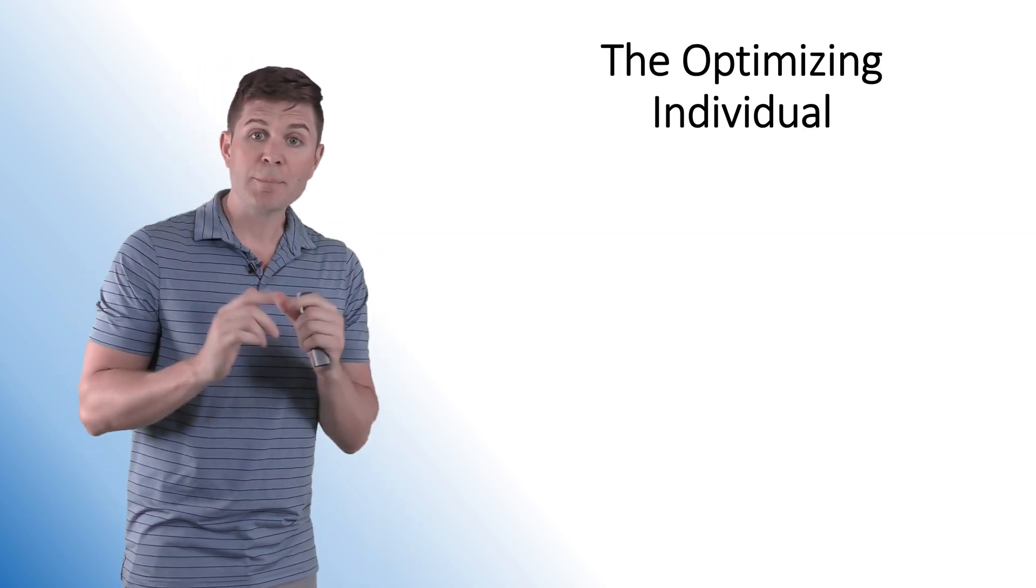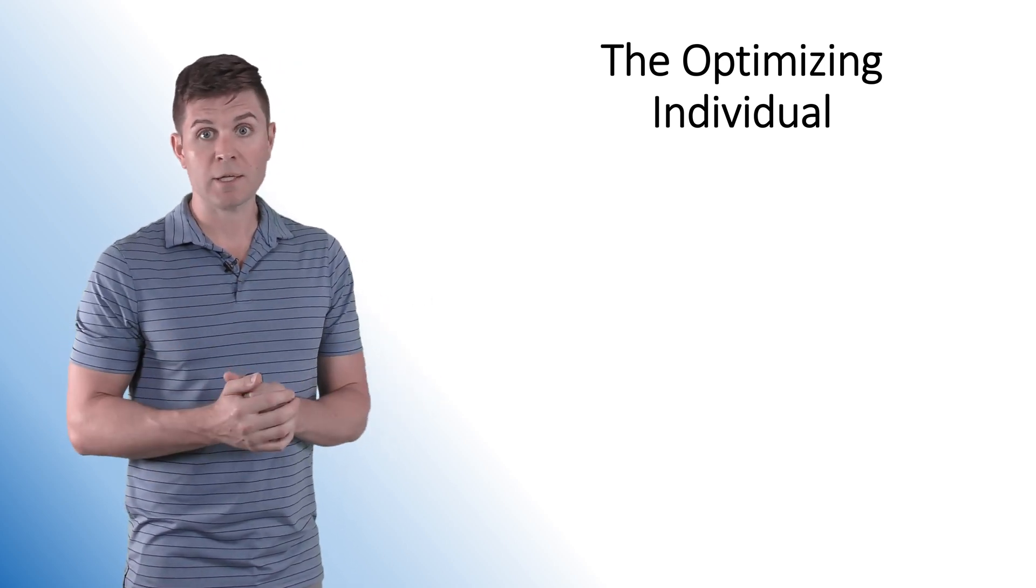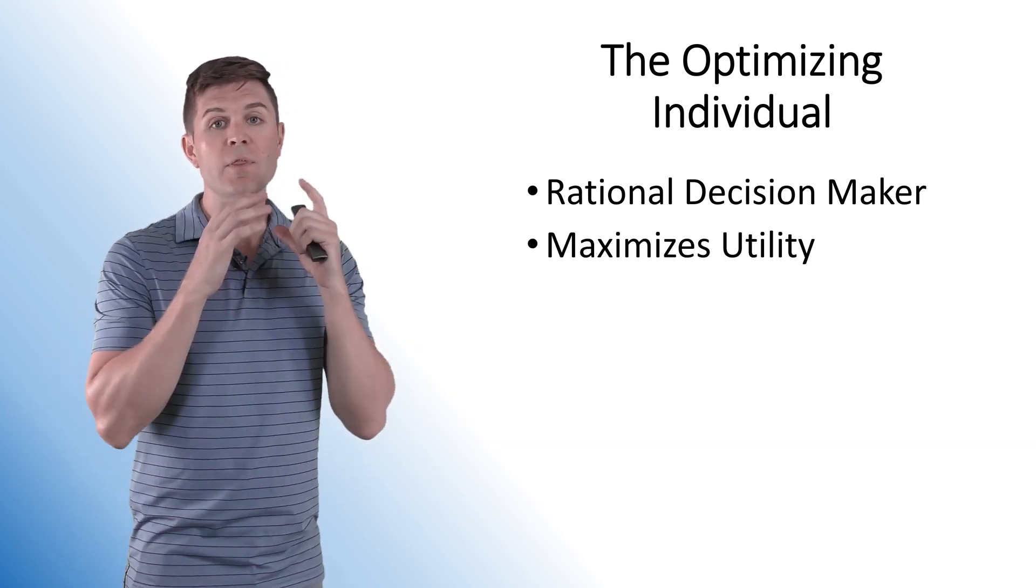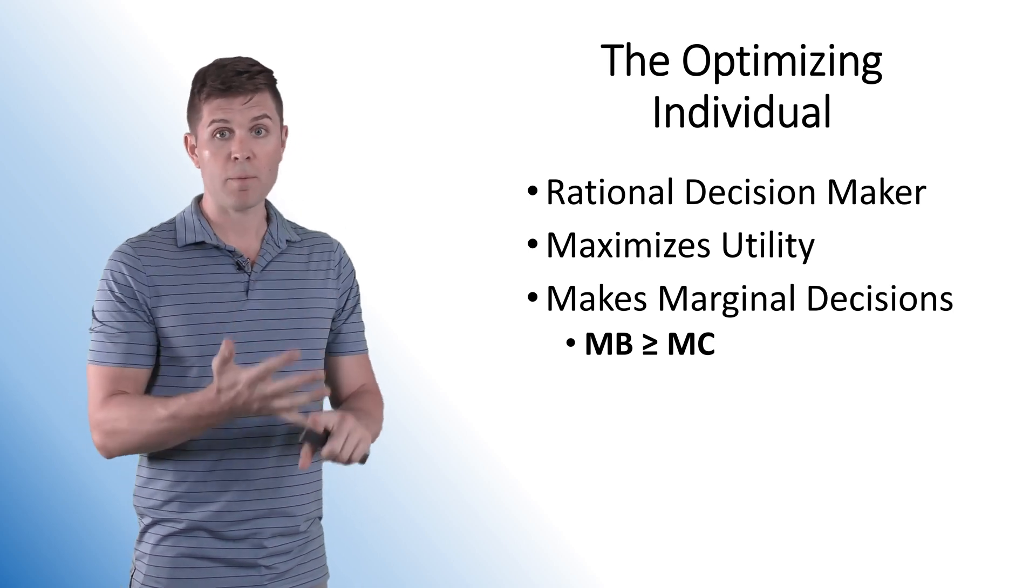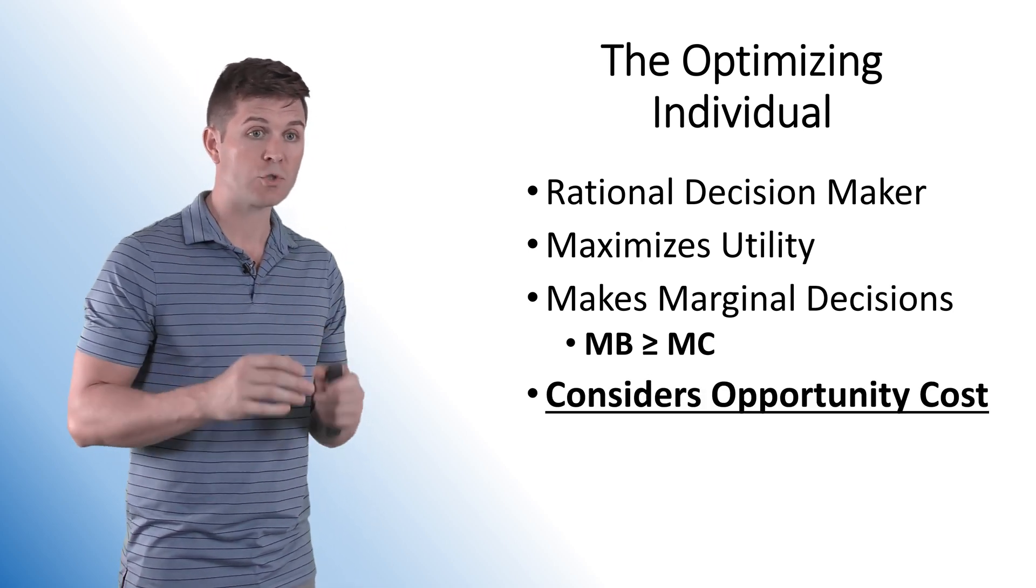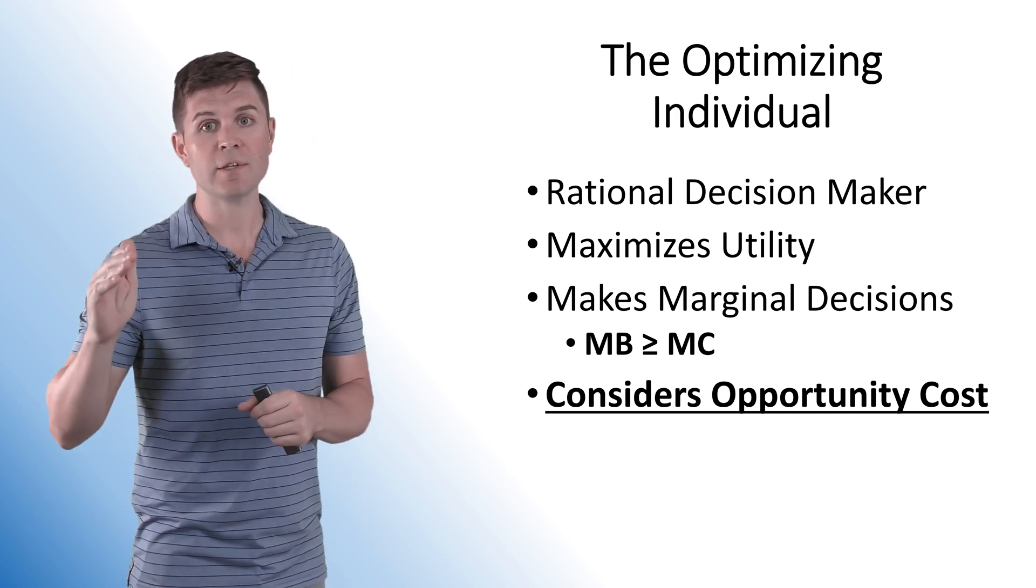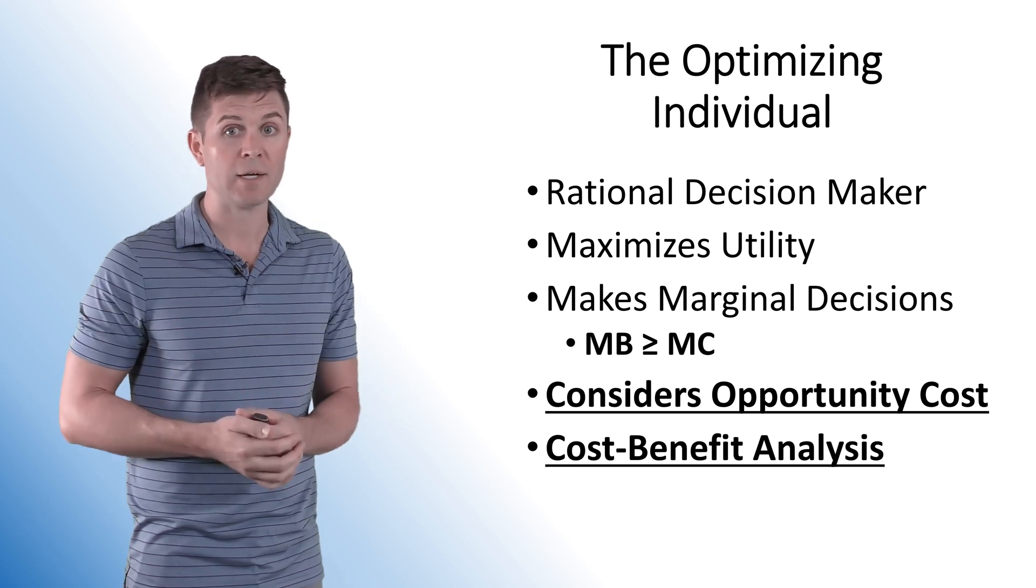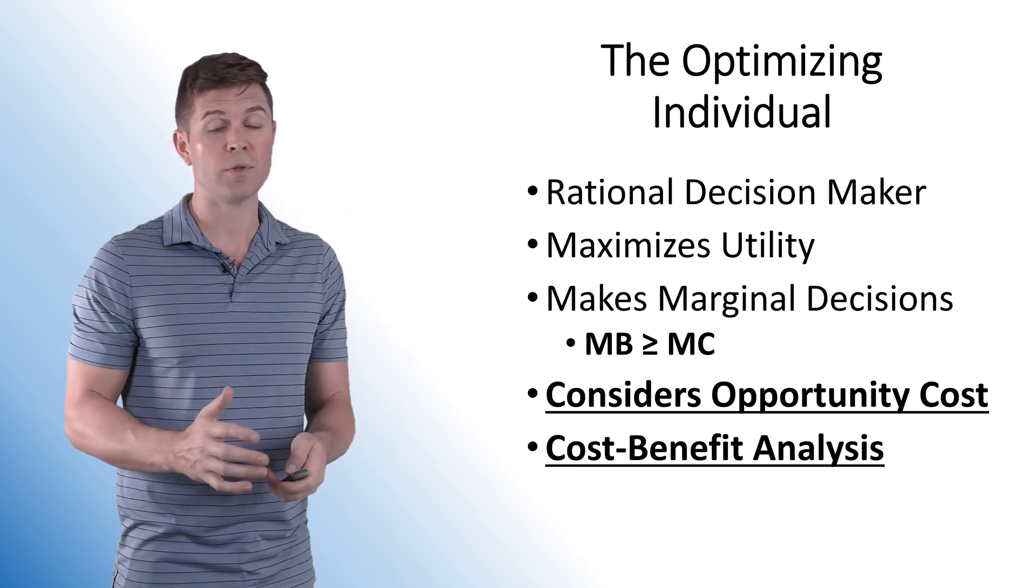Now to the optimizing individual one more time. This is the guy we've been talking about since the beginning of this class. He is the rational decision maker. He is the individual that's out there trying to maximize their utility. He makes marginal decisions where marginal benefit is greater than or equal to marginal cost. In this video, we're going to learn about how he considers the opportunity cost of a situation, and then uses cost-benefit analysis to figure out whether or not that decision is worth it or not.